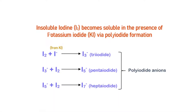Iodine on its own is insoluble in water since I2 is a non-polar covalent molecule. On the other hand, potassium iodide, which is a polar ionic compound, dissolves in water, which is a polar solvent. When potassium iodide dissolves in water, it ionizes to K+ and I−.